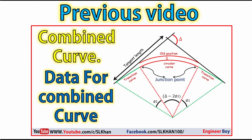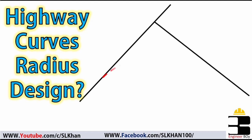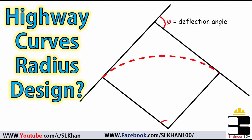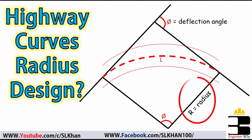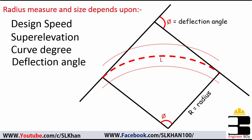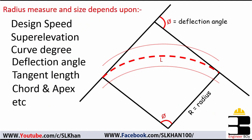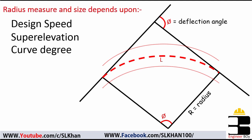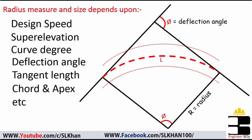After watching the previous video about road curves, many viewers asked about the radius of curve — specifically where it comes from. This question has been asked many times in the comment section, and I'm going to answer it today. It actually depends on different parameters of the curve, like the deflection angle, the chord of curve, the middle ordinate, and especially the design speed. These factors are all involved in the determination of curve radii.